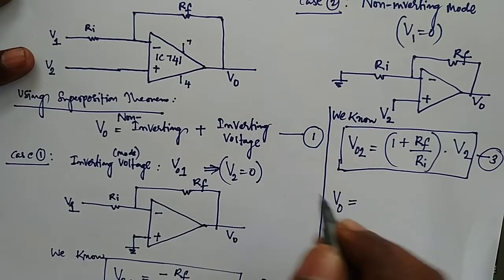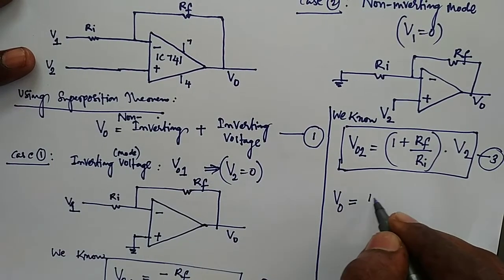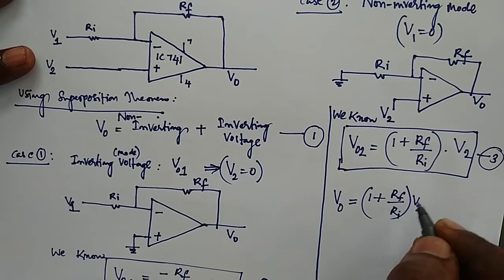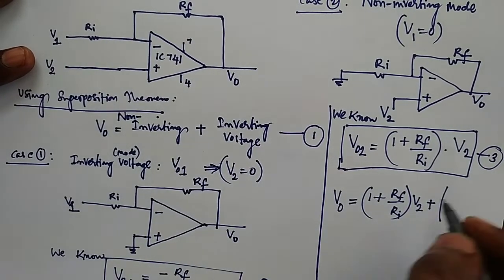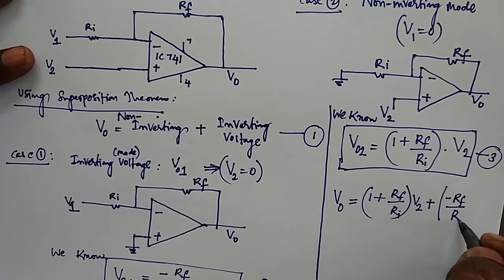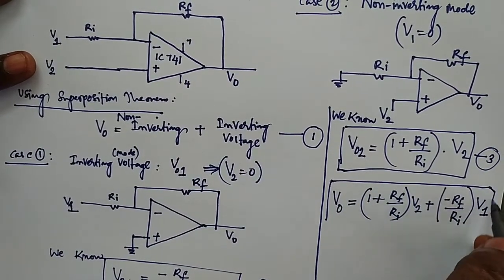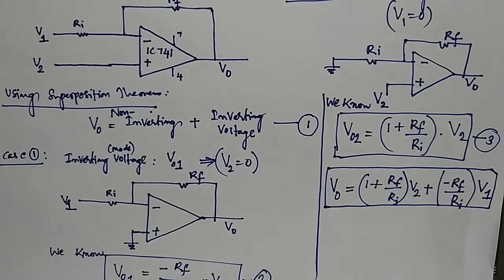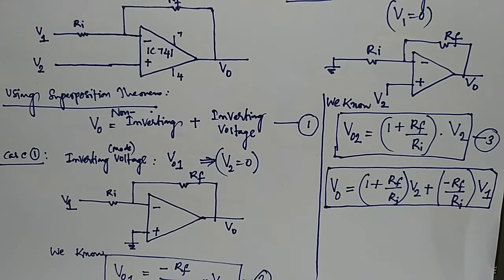The final output V0 combines both results: V0 = (1 + Rf/Ri) × V2 − (Rf/Ri) × V1. This is the final expression for the difference amplifier. The conclusion is that it is the combination of both inverting voltage and non-inverting voltage — this is the overall expression of the difference amplifier.